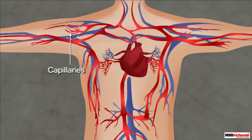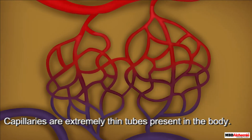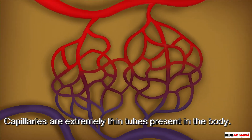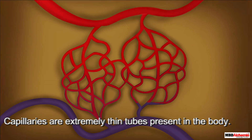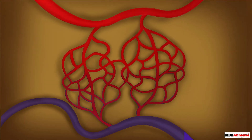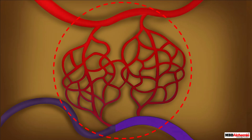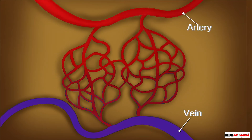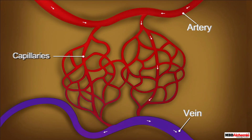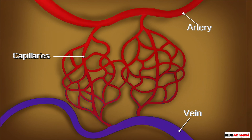The last type of blood vessel is the capillary. Capillaries are extremely thin tubes present in the body. They form a network of vessels that connect the arteries to the veins. The function of the capillaries is to carry blood from the arteries to the veins. Like veins, they too have thin walls.